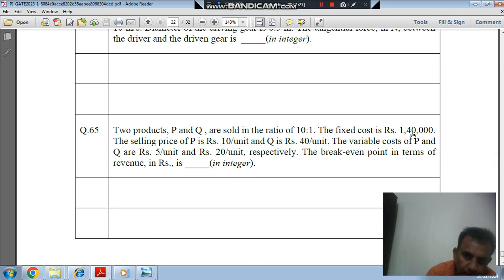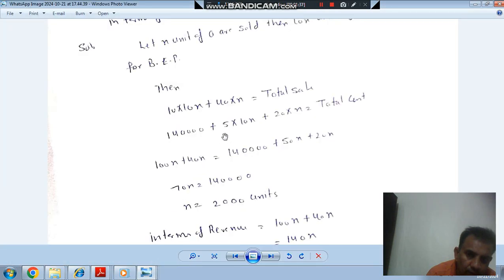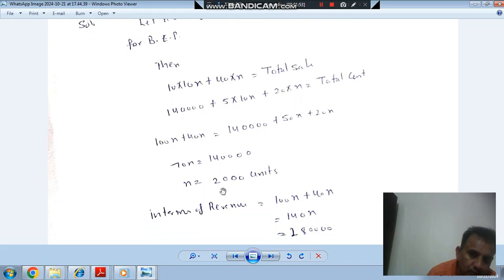...that is 1,40,000 plus variable cost, that is 5 into 10X plus 20X, because the variable cost of Q is Rs. 20 and variable cost of P is Rs. 5 per unit. So total cost is this. So for break-even point, total sale should be equal to total cost, so we can find out X.